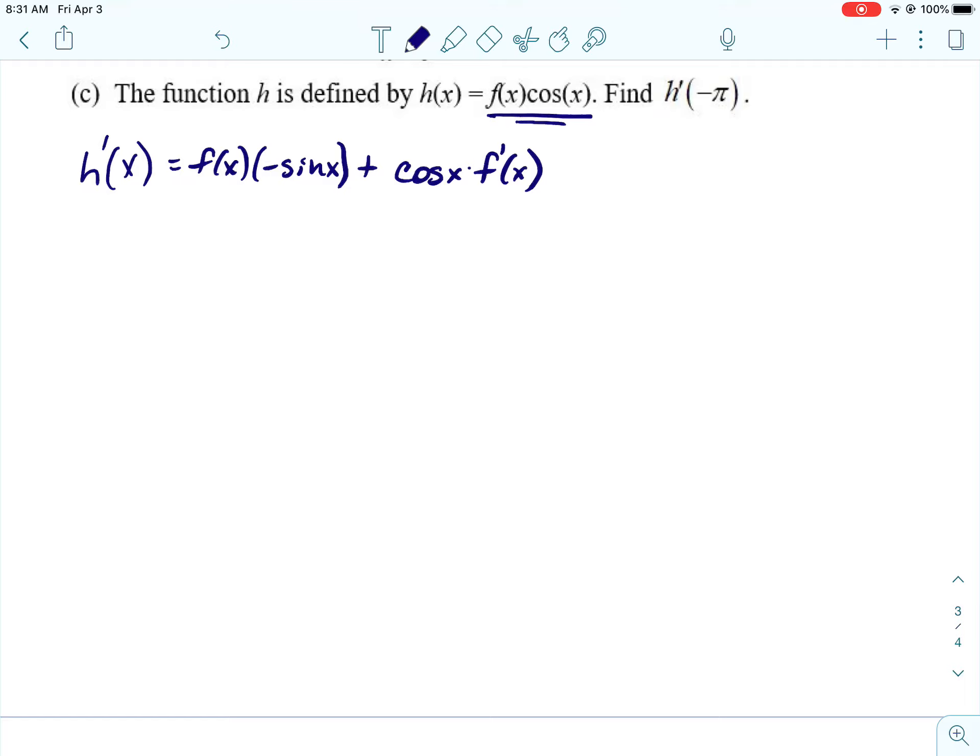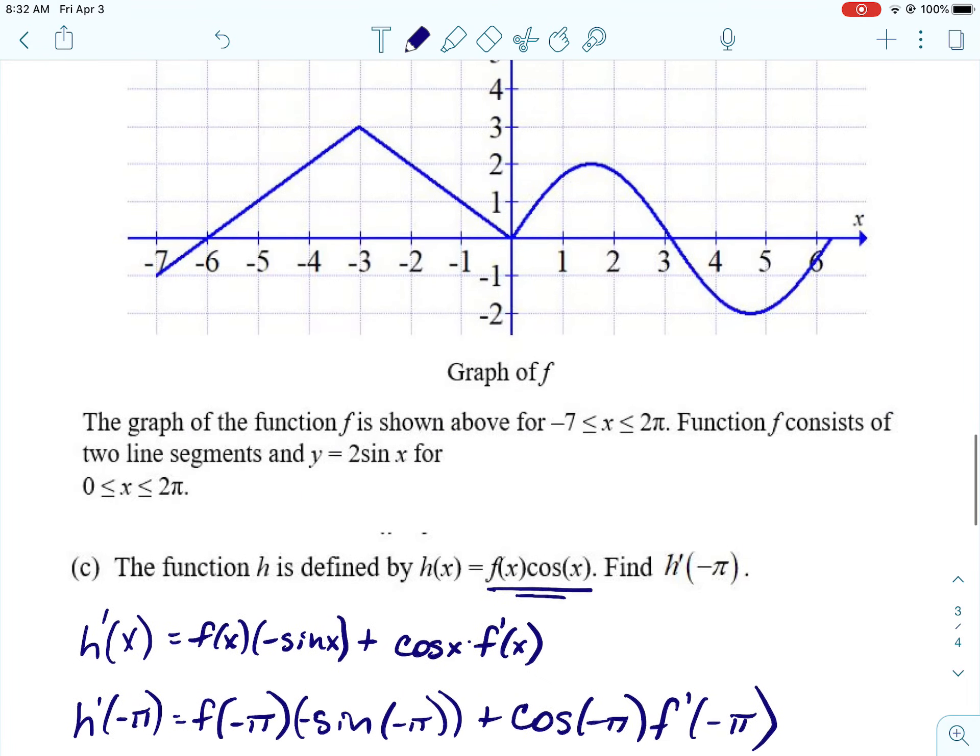Multiply by the derivative of the second. And then plus, leave, and then leave the second one alone. And multiply by the derivative of the first. Alright. And the calc medic people didn't assign points to this, but usually this will get you a point just writing that. Alright, then we would need to plug in the negative π.